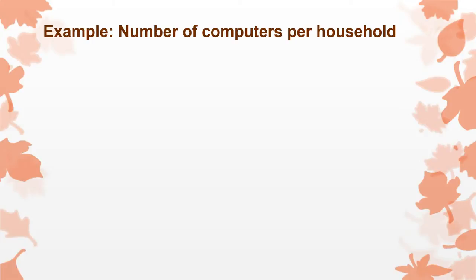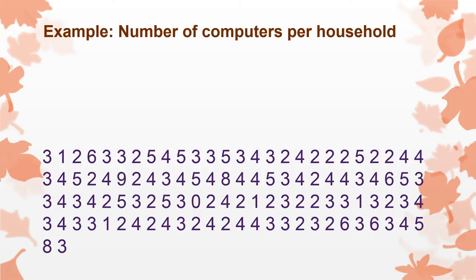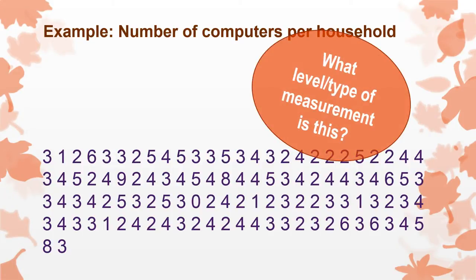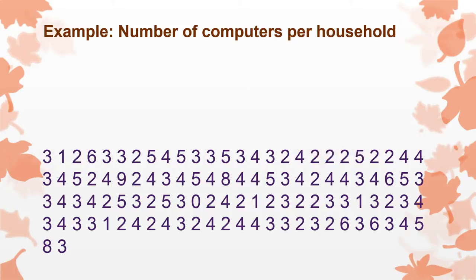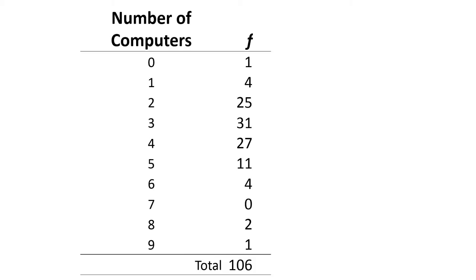So here's another example. The number of computers per household in a whole bunch of households. Those are individual digits by the way. Let's just assume that nobody had two digit number of computers. So what kind of measurement is this? Anyway just looking at these numbers it's hard to make sense out of them but turning them into a frequency table suddenly everything kind of makes sense.